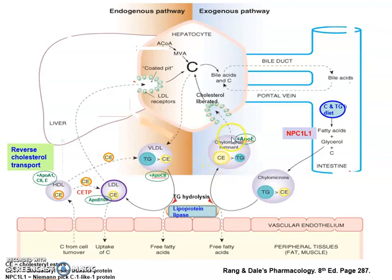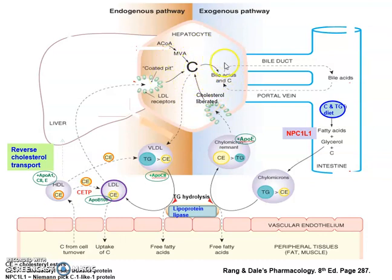By virtue of its ApoE surface protein, the chylomicron remnant will bind to receptors that recognize the ApoE protein, and cholesterol can be liberated. It can then either be stored in the hepatocytes, oxidized as bile acids, or excreted in the feces with the release of bile.